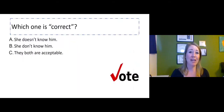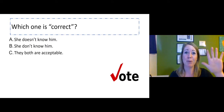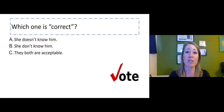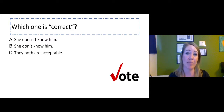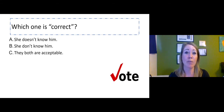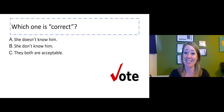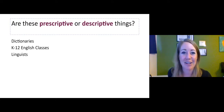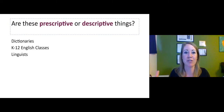Now, knowing that we have two different perspectives — prescriptivism, the people who say here are the rules and structures, and descriptivism, here's how people use the language — which one is correct? A prescriptivist would say A is correct: she doesn't know him, because it's following the pronoun rule. A descriptivist would say C — they both are acceptable — because it's acceptable in whatever dialect uses it. That's how we use it.